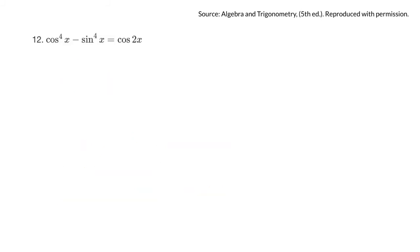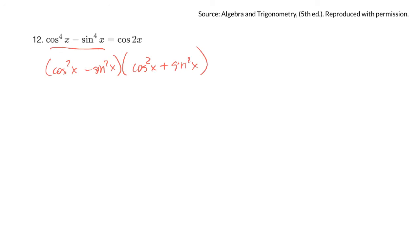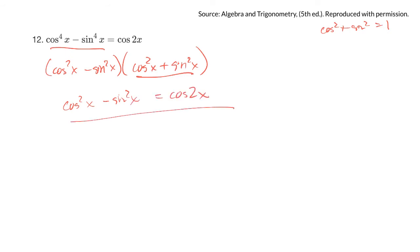Cos⁴x — that looks like a difference of squares. So that factors as (cos²x minus sin²x)(cos²x plus sin²x). Now cos²x plus sin²x equals 1 from the Pythagorean identity. So I just have cos²x minus sin²x, and that equals cos 2x — that's on the identity chart. Done.